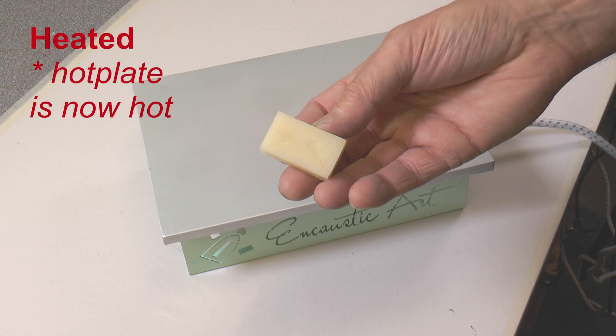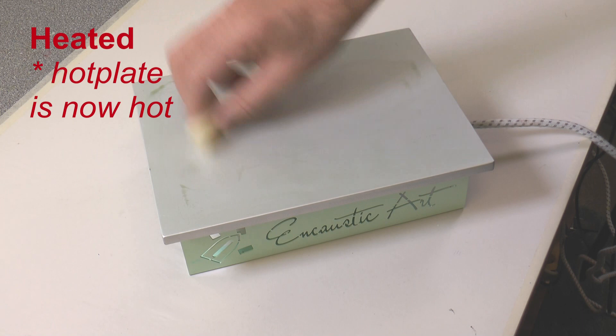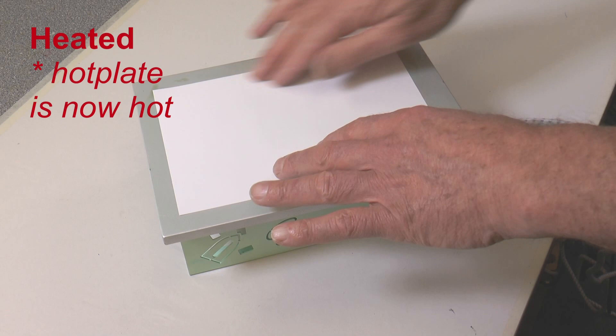Of course you could use a simple clip but then that can get in the way. Another way to work is to take clear wax or actually any colour of wax, wax over the entire surface of the hot plate and then place your card down. The suction of the wax will hold it in position. Then you can start working.